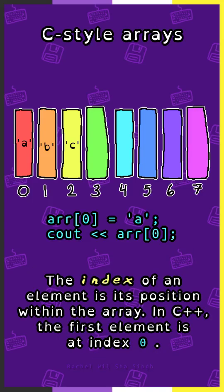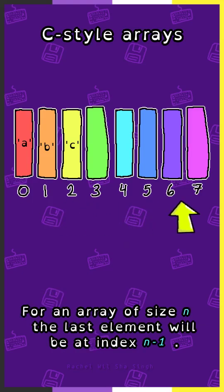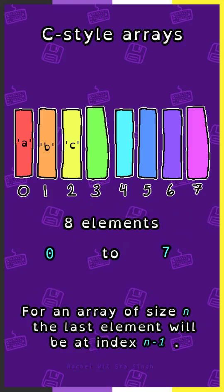The index of an element is its position within the array. In C++, the first element is at index 0. For an array of size n, the last element will be at index n-1.